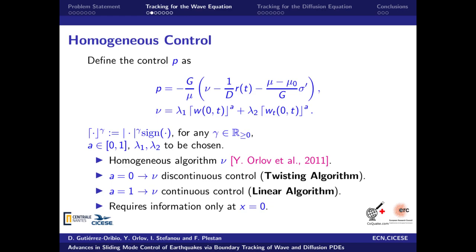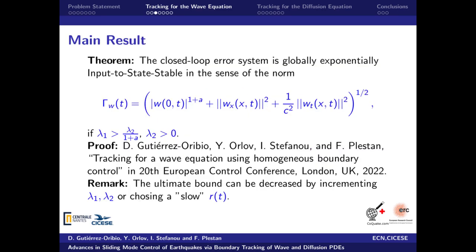The brackets notation represents a sine power function depending on the value of a. Then, when a is equal to 0, we obtain a discontinuous control, which is the so-called twisting algorithm. On the other hand, when a is equal to 1, we obtain a linear control. One important feature of such control is that it only requires feedback from the states at x equal to 0, which reduces the amount of information needed to solve the tracking problem. The question is, how to select the control gains lambda 1 and lambda 2?